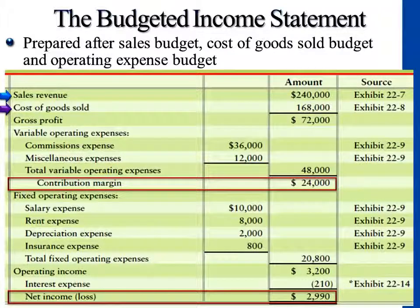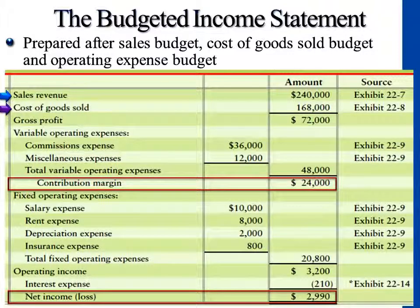That's pretty much all I want to cover today for this new chapter — basically what is the budgeted income statement, what are the detailed components in it, and the three main tables.